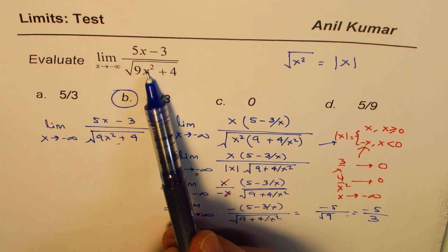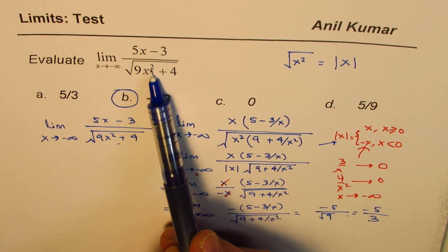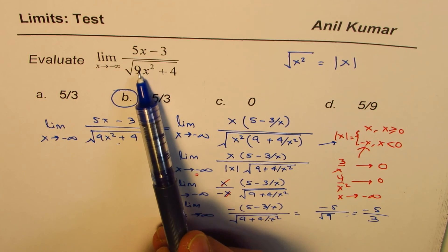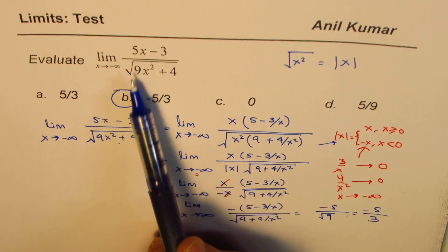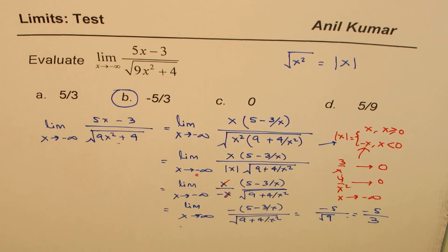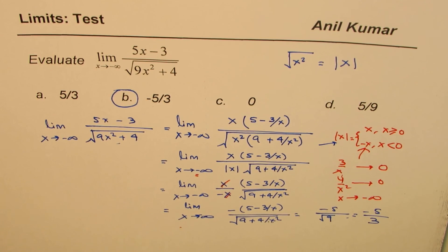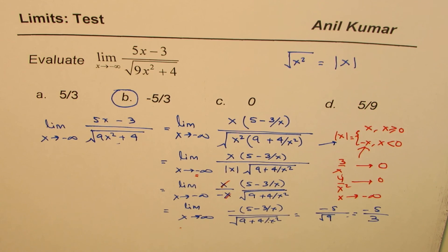Now, whenever the degrees are same, leading coefficients ratio: square root of 9 is 3. So 5 over 3 with that negative sign should be your answer. So that could have been a quick solution, but this is the right way of solving such questions.